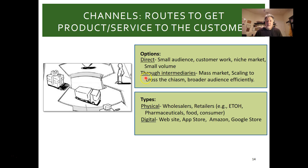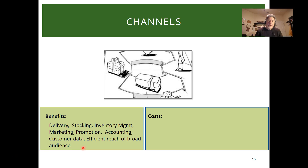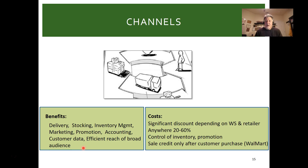Going direct avoids giving away margin to the channel. However, channels do provide value when going broad — delivery, stocking, inventory management, marketing, promotion, and accounting, especially in regulated industries like alcohol or pharmaceuticals where tax accounting is critical. That's why in the wine business, Southern Wine & Spirits dominates — if you want to get into Vegas, Texas, or Florida, you have to work with that distributor.